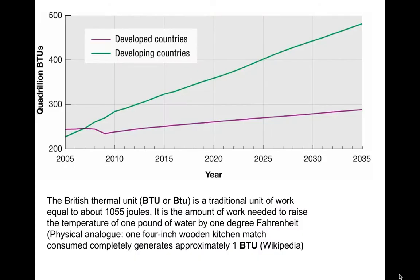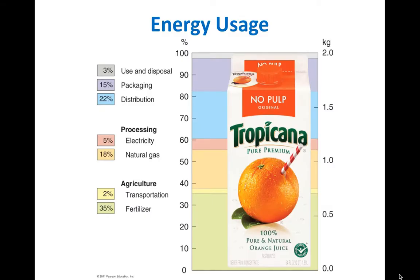We look at developing countries versus developed countries and the amount of energy being used — this is the idea of how much work actually goes into the amount of energy you're getting. Here's the amount of energy used to make orange juice as an example. You can see quite a bit goes into agriculture — 37% of the energy used goes to the agricultural aspect, between fertilizer and transportation. Then we get into processing, and then disposal, packaging, and distribution.